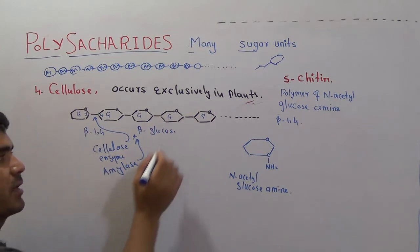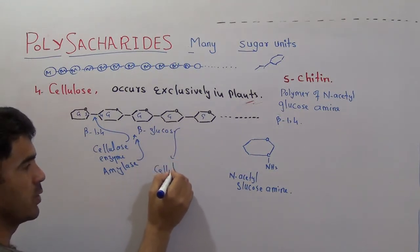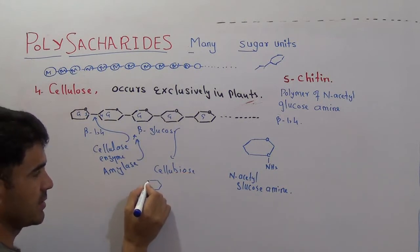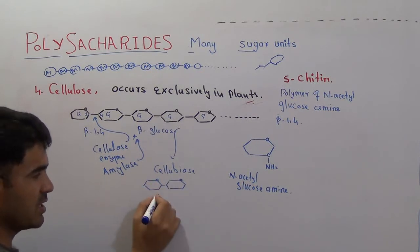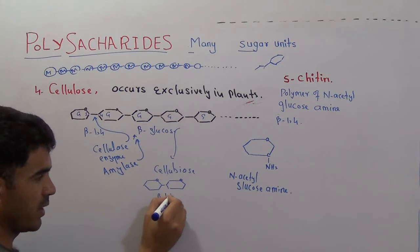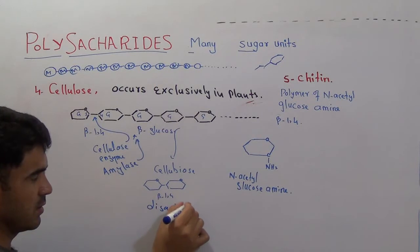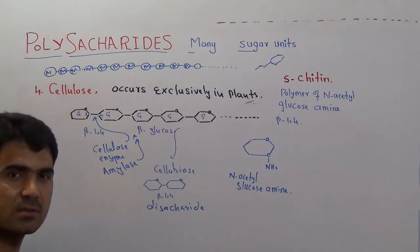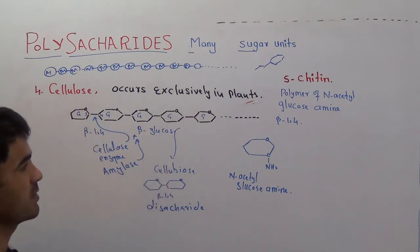If you hydrolyze cellulose, you will get cellobiose. Cellobiose is actually a disaccharide — one sugar linked with another sugar by the help of beta 1,4 linkage. This kind of disaccharide is called cellobiose. Cellobiose is the hydrolysis product of cellulose, just like dextrin is the hydrolysis product of starch.